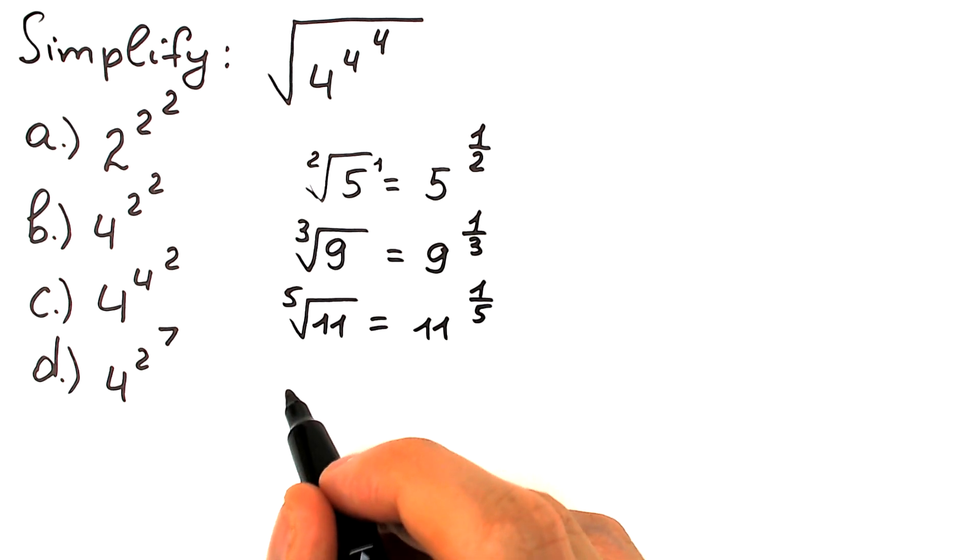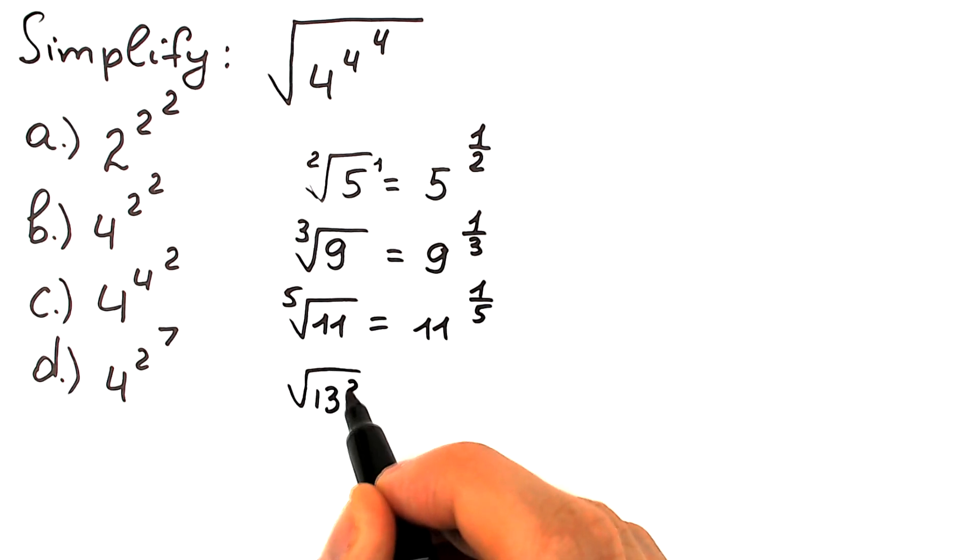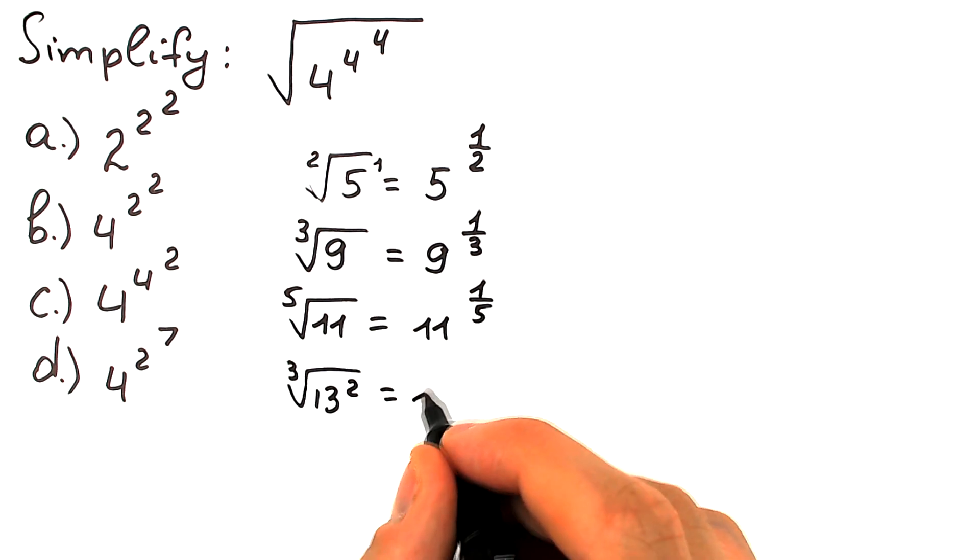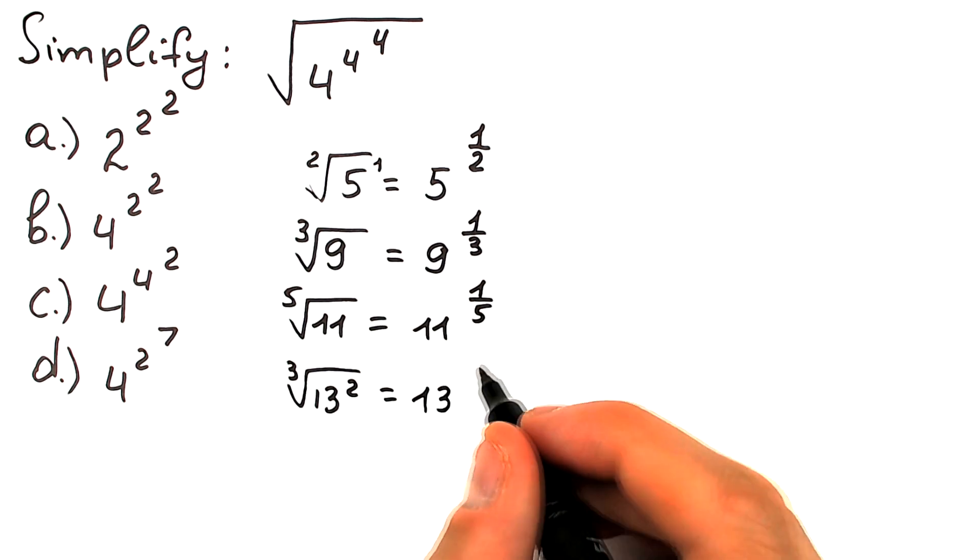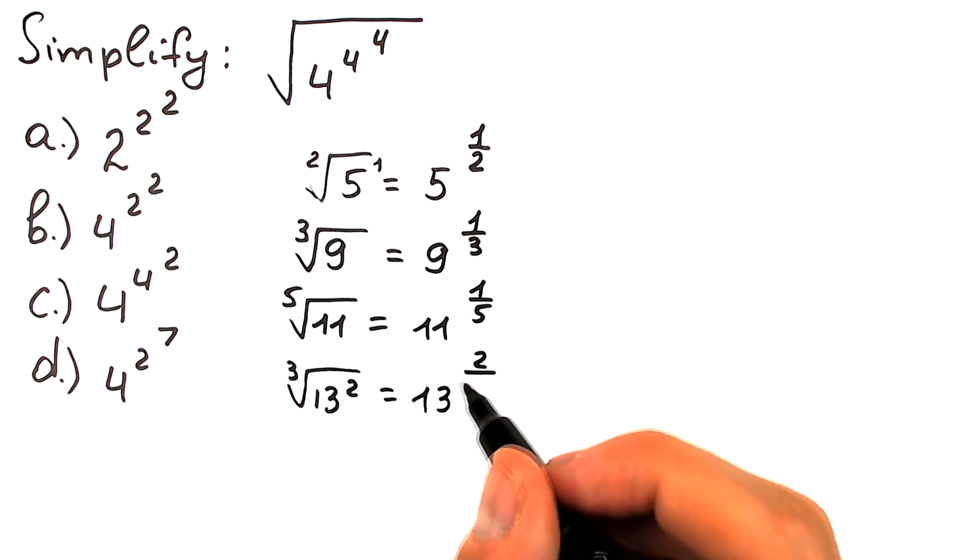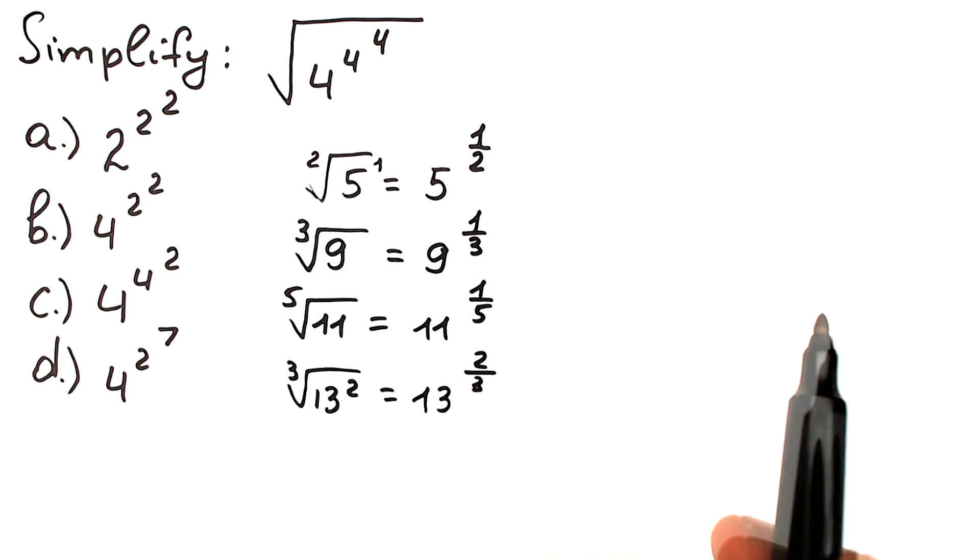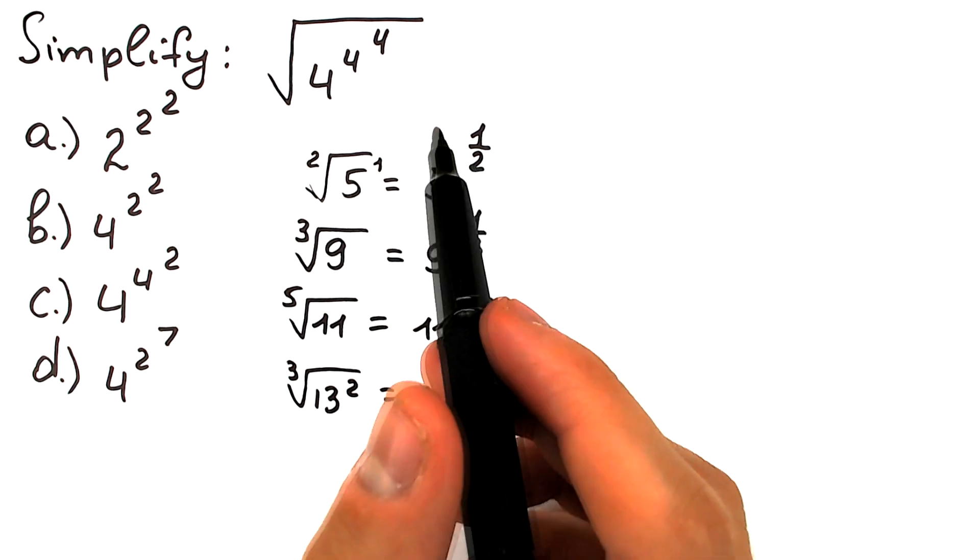And maybe the last example, let's look at it, for example, 13 square raised to the cube's root of 13 square. We can write it as 13 to the power 2 in our numerator and we divide it by 3 in our denominator, so 2 over 3.